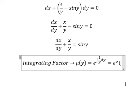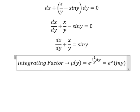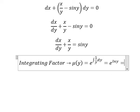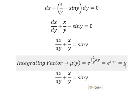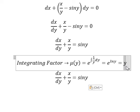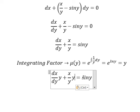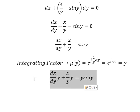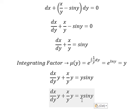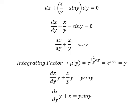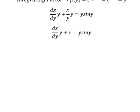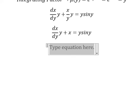This is for integrating factor and we have one over y dy. So this one we have ln y. And this one we can simplify and you got about y. That means we need to multiply both sides by y. Next we need to put the integral for both sides.